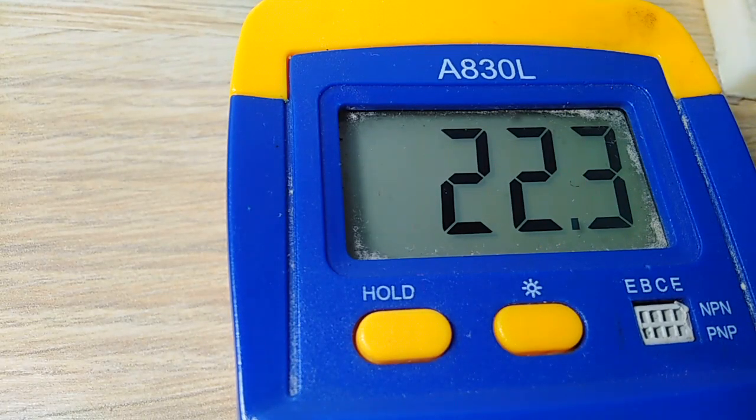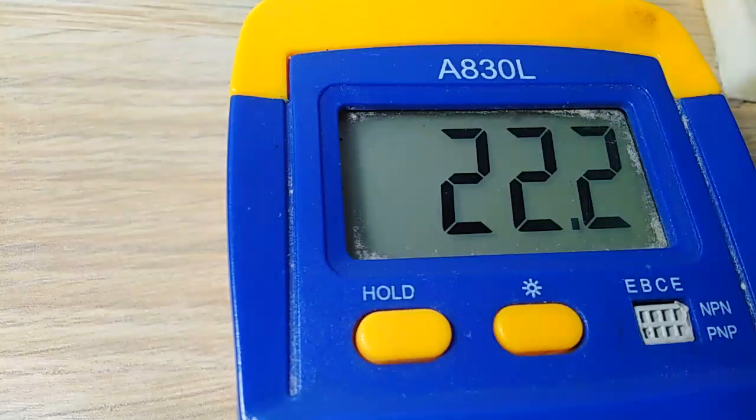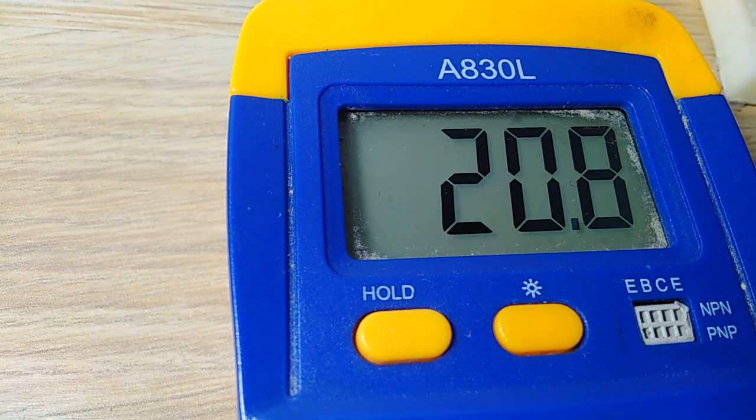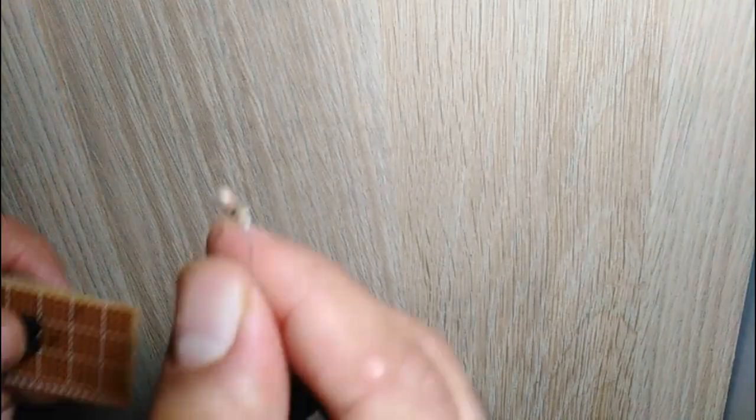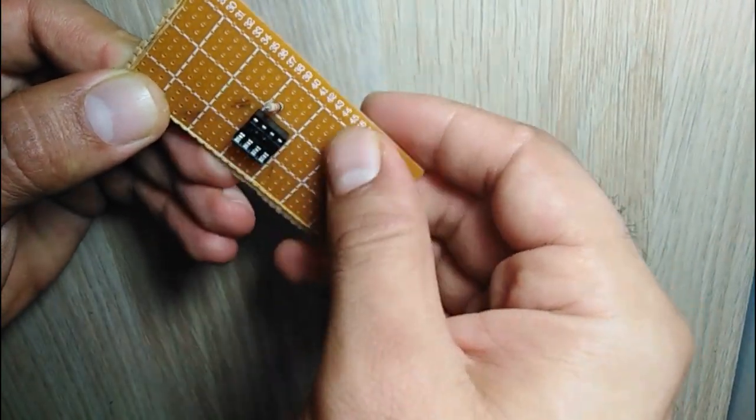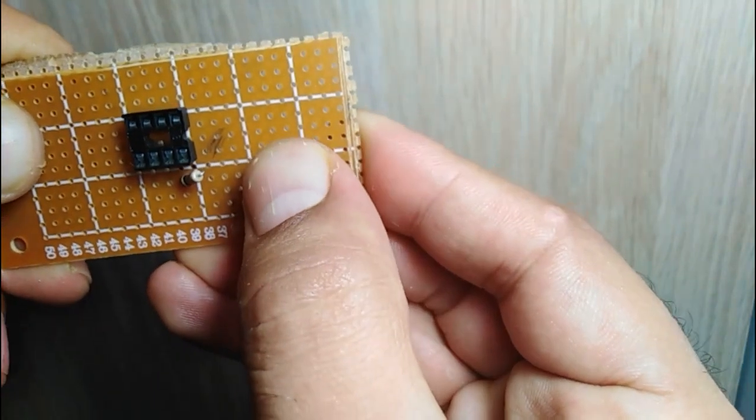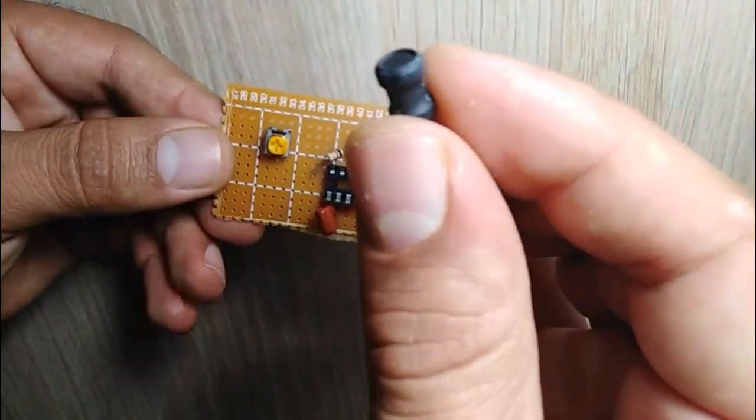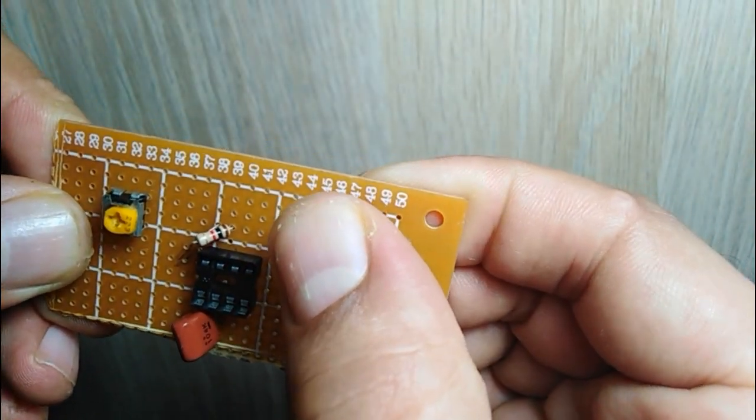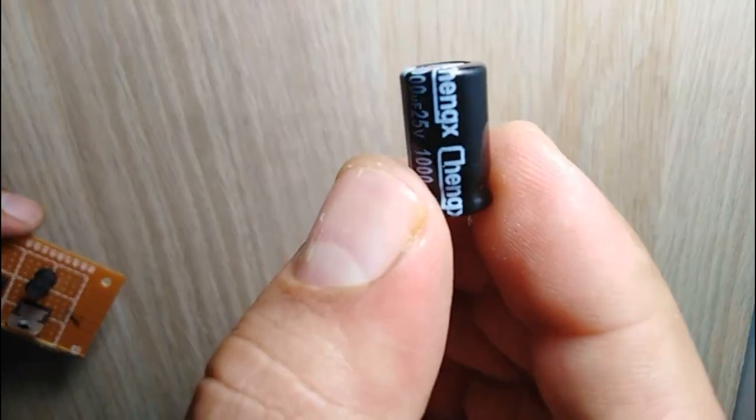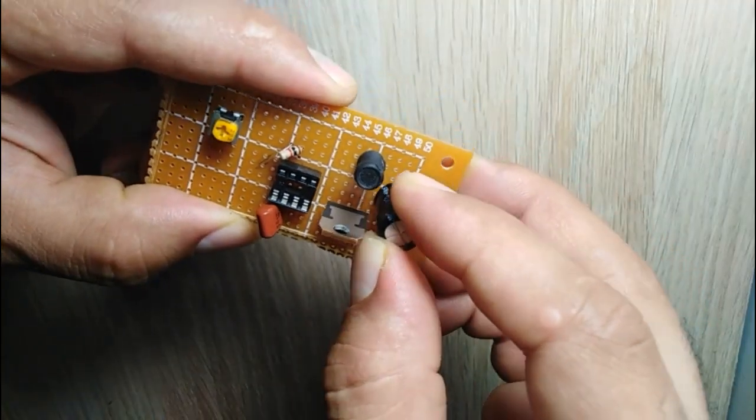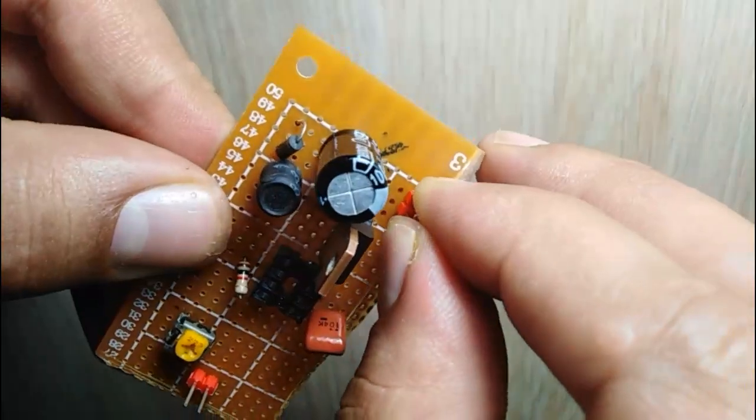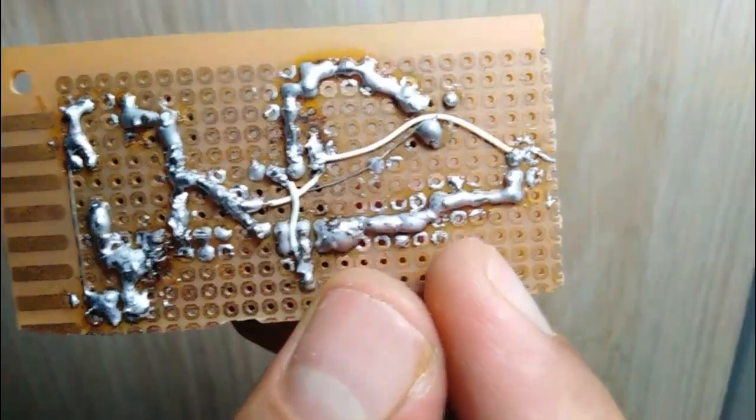The circuit works well, but it has a problem. The output voltage changes if we change the load because the circuit has no feedback. So let's make it on a PCB. I solder the IC socket, then 1 kilohm resistor, then 50 kilohm potentiometer, 100 nanofarad capacitor, 3mH inductor, the MOSFET, capacitor, the diode, and the input and output connectors. I solder everything according to this schematic.